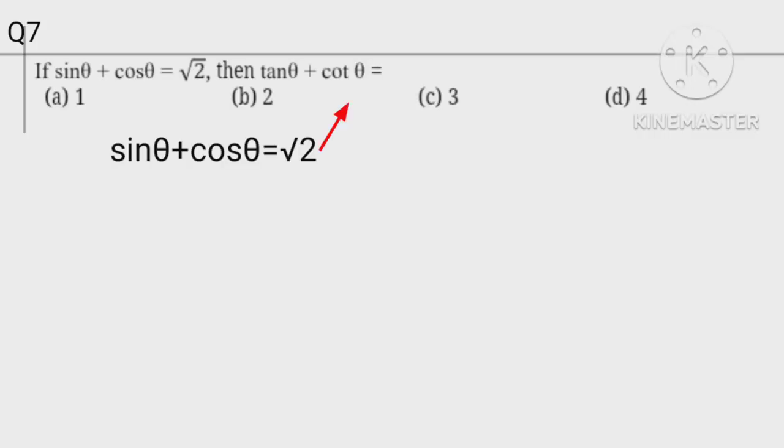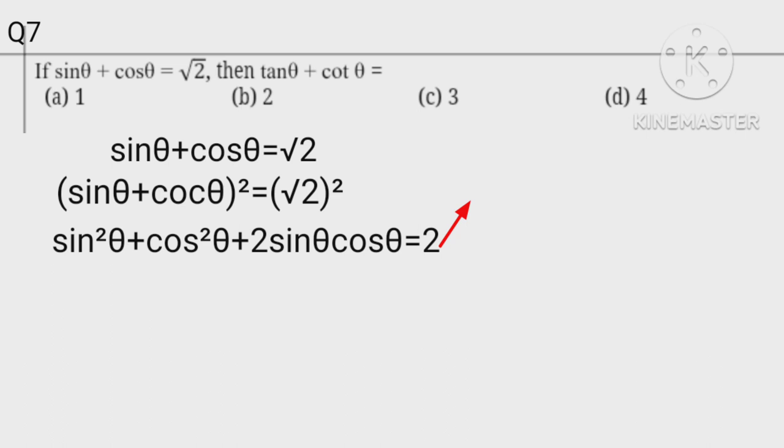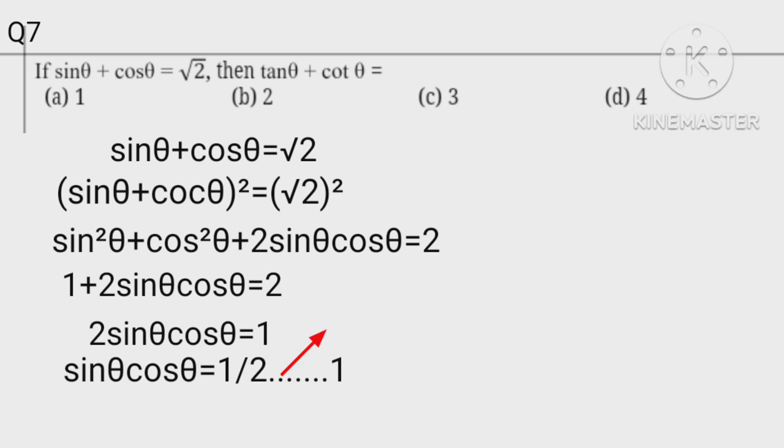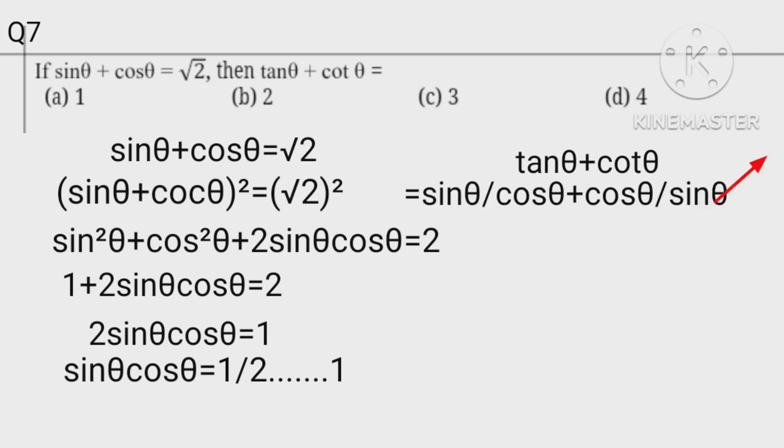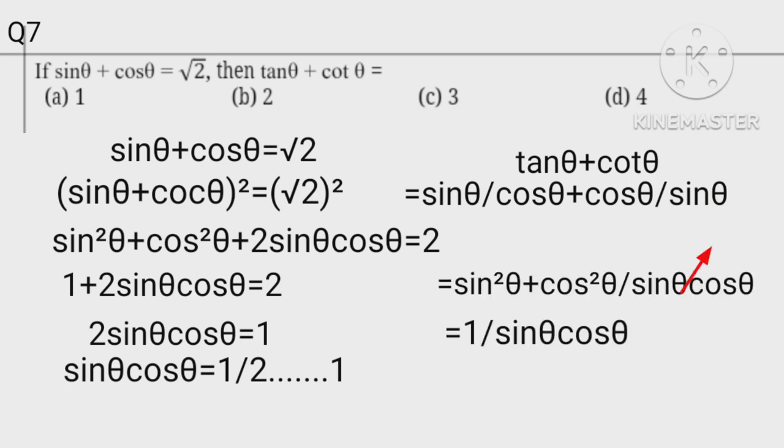Sin theta plus cos theta equals square root 2. Squaring both sides, sin squared theta plus cos squared theta plus 2 sin theta cos theta equals 2. Since sin squared plus cos squared equals 1, we get 1 plus 2 sin theta cos theta equals 2. Therefore sin theta cos theta equals 1 half. Hence tan theta plus cot theta equals sin squared theta plus cos squared theta upon sin theta cos theta equals 1 over 1 half equals 2.